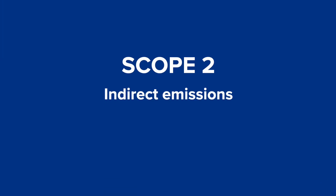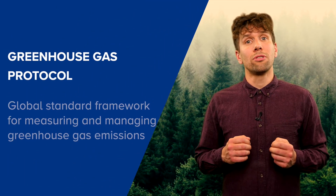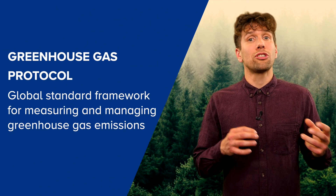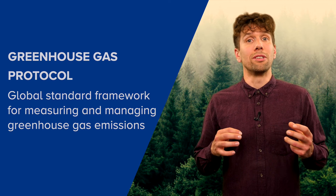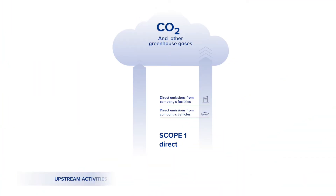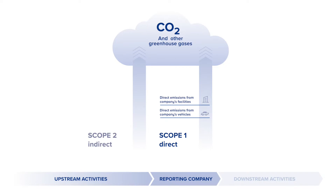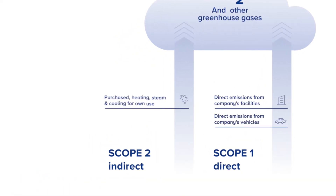Now we come to Scope 2 emissions, which are your company's indirect emissions from purchased energy. According to the GHG protocol, Scope 2 represents one of the largest sources of greenhouse gas emissions globally, and it generally offers an opportunity to significantly reduce emissions. Scope 2 emissions mostly include indirect greenhouse gas emissions from purchased or acquired energy like electricity, steam, heat or cooling, generated off-site and consumed by the reporting company.